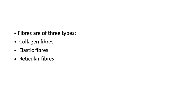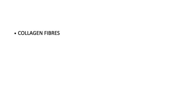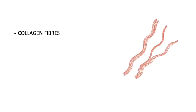Fibers are of three types: collagen fibers, elastic fibers, and reticular fibers. Collagen fibers are seen in all types of connective tissue. When unstained, they usually appear colorless. They are made up of fibrils and run in various bundles. Collagen fibers are synthesized by fibroblasts and are made up of a protein called collagen. When stained with H&E, they stain pink.